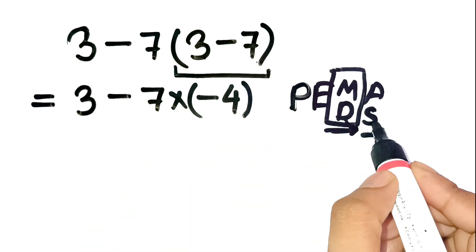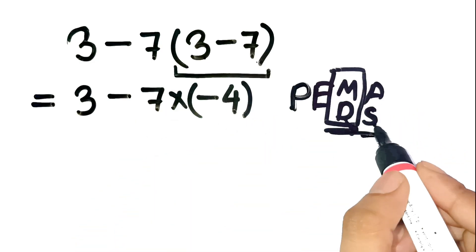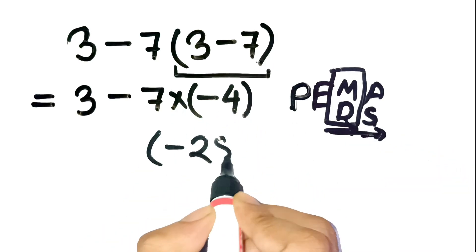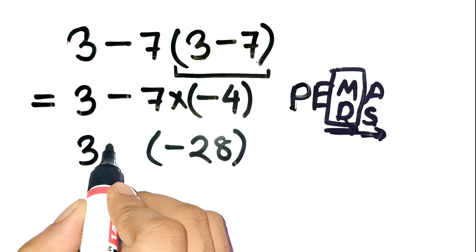Next, multiplication comes before subtraction when following left to right rules for PEMDAS. So we do 7 times negative 4, which is negative 28.